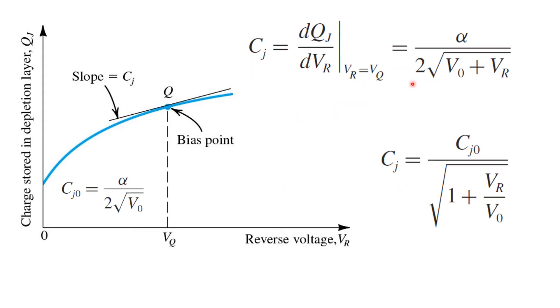The relationship is repeated here in the top right. Normally, instead of being expressed as a function of alpha, however, we express the junction capacitance in terms of its value at zero reverse bias. That's represented by the symbol Cj0 here. Cj0 is obviously related to alpha as well as the built-in voltage of the P-N junction. So this expression here is more commonly used to find the junction capacitance as a function of the reverse voltage across it.